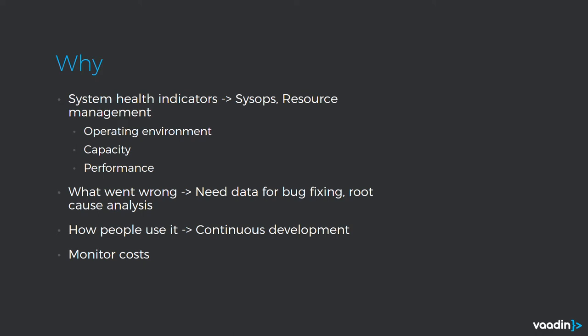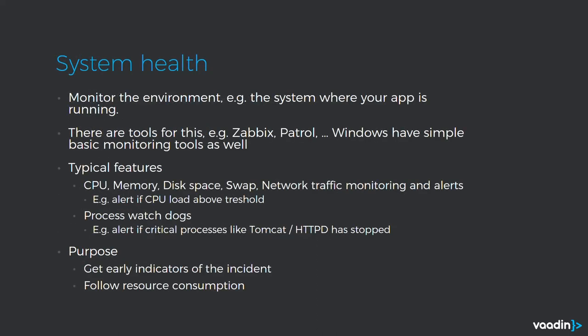We also want to gather knowledge about how people are using the application. It's not just about the system and potential problems — how people use the application is vital information for continuous development. A fourth important thing, related to the system itself, is monitoring costs. Memory and servers cost money, and sometimes resources used in applications also cost money — for example, in some applications we send a lot of SMSs, and those are not free.